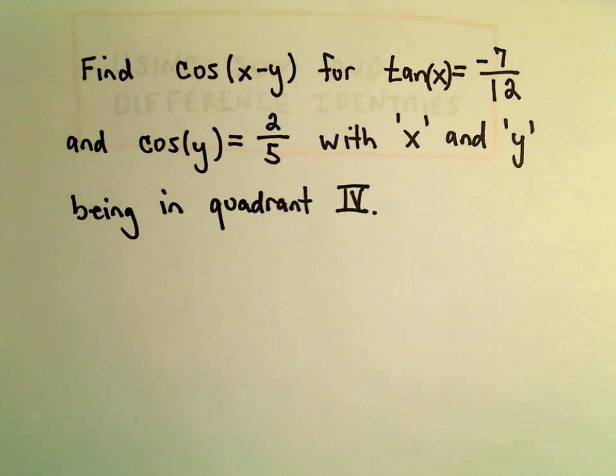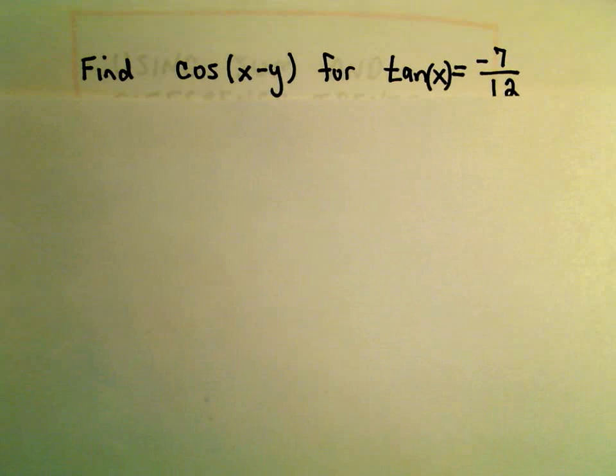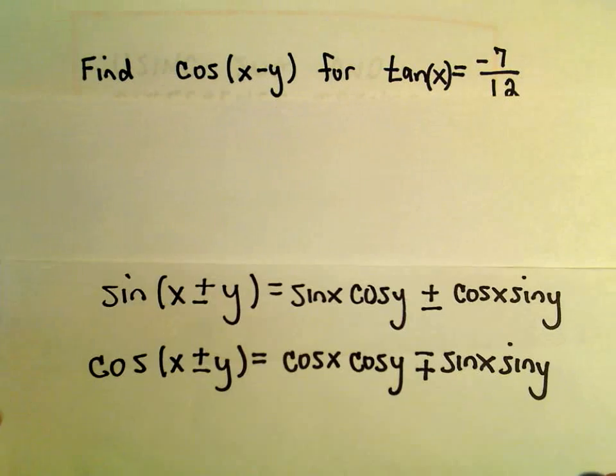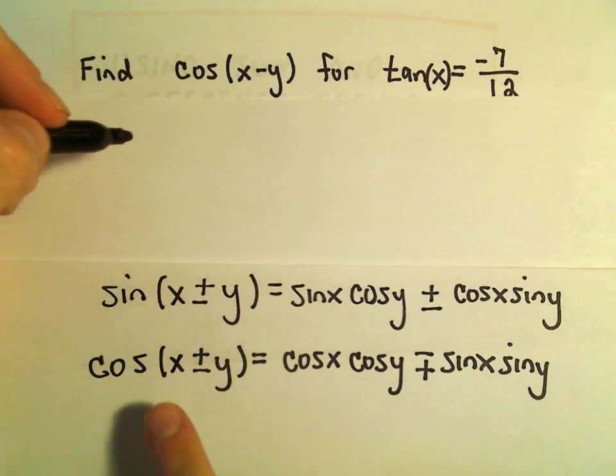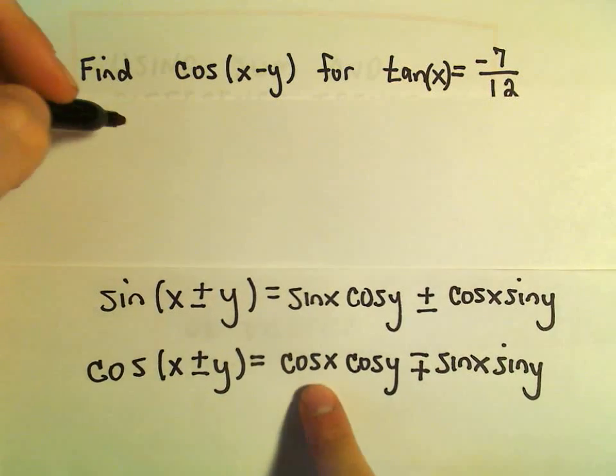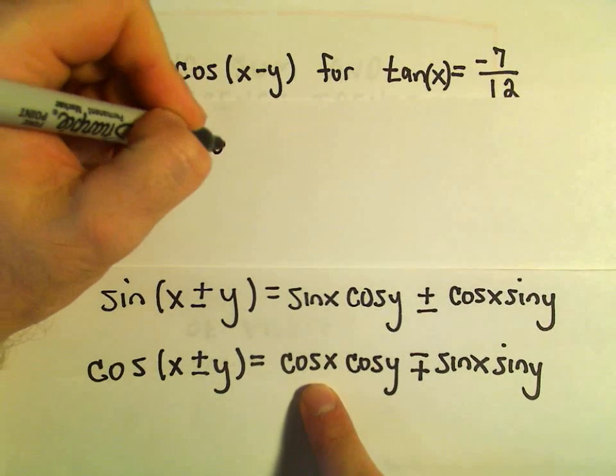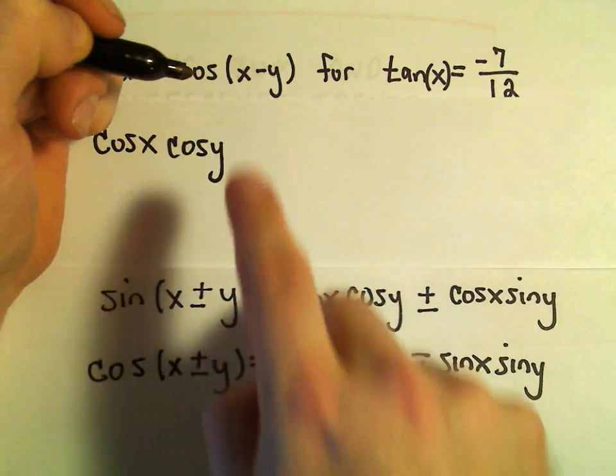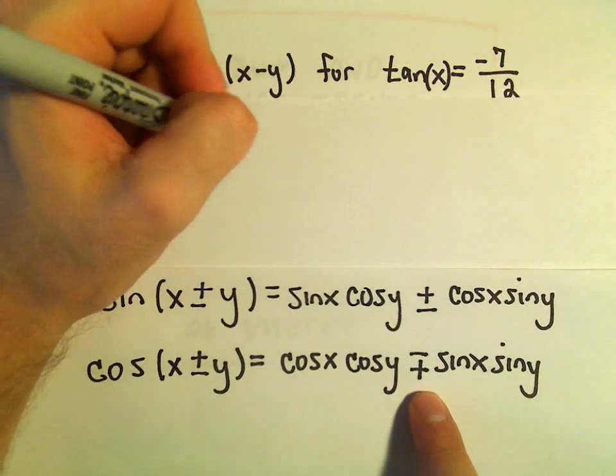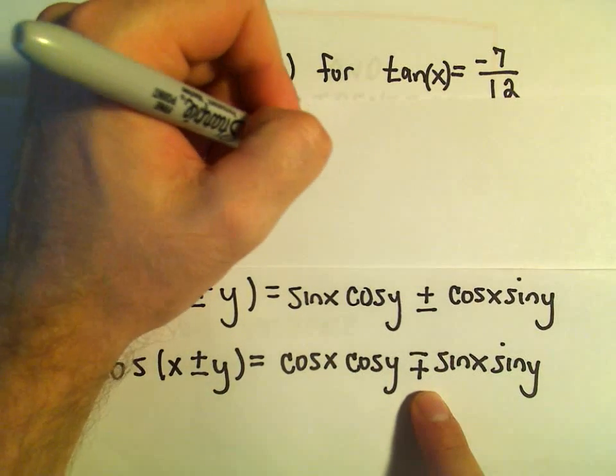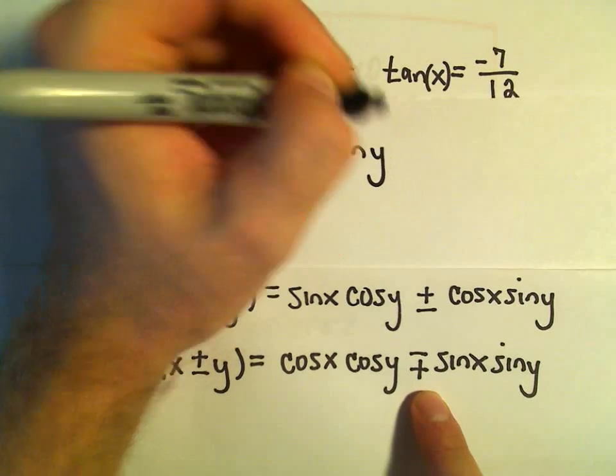So the first thing I'm going to do is expand out cosine of x minus y using the identity that we have. Cosine of x minus y is cosine of x times cosine of y, and if there's a negative in between, we use a positive sign, so plus sine x sine y.